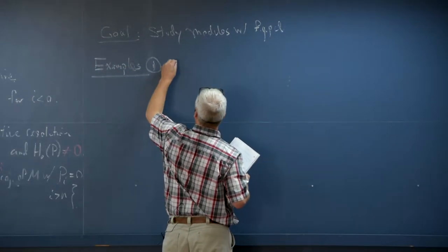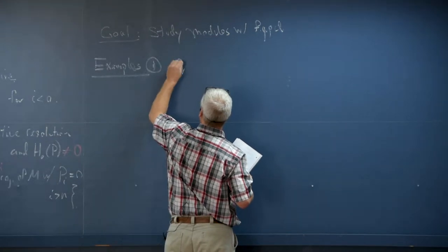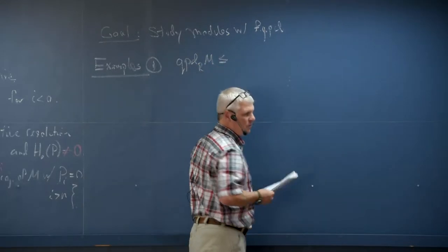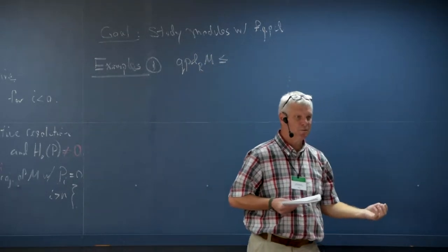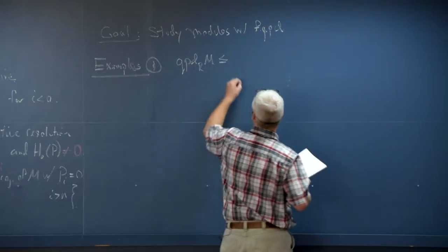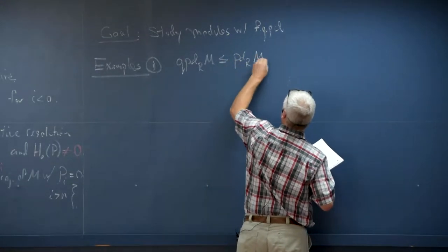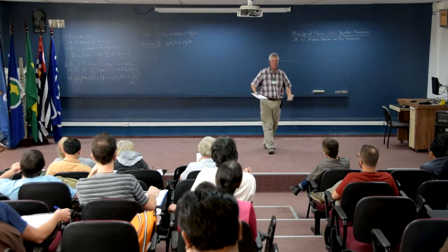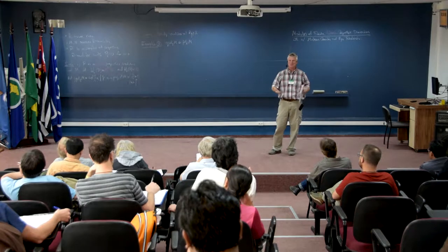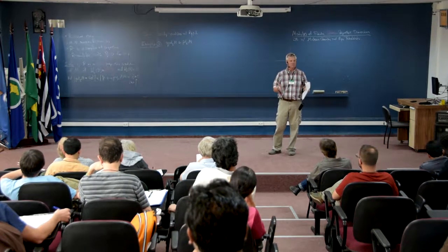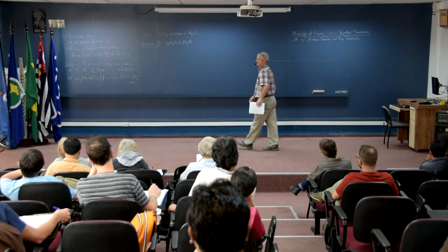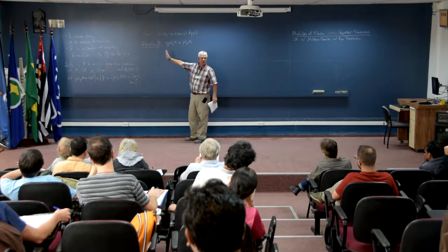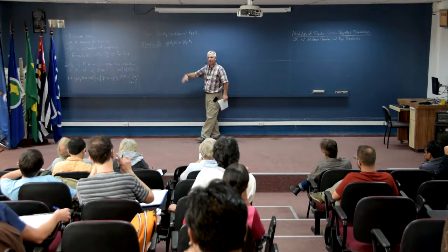Obviously, the quasi-projective dimension of any module is less than or equal to the projective dimension. Because if you have a finite projective resolution, well, that's a finite quasi-projective resolution. There might be a shorter one, but at least you know that it's finite. So any module of finite projective dimension has finite quasi-projective dimension.